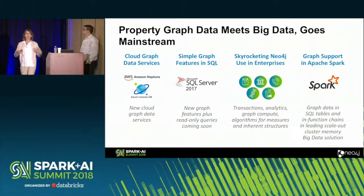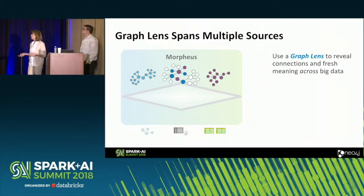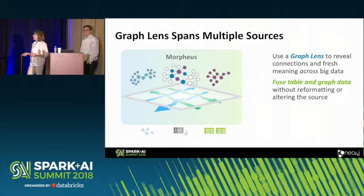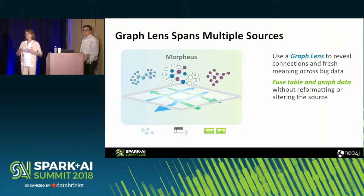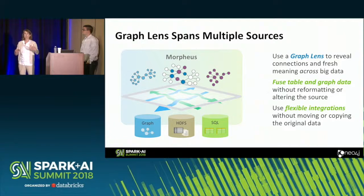Spark is probably one of the most popular scale-out platforms out there for compute. And it really made sense, as we were talking to our customers, to bring these things together and give you a graph lens that spans across multiple sources. You can look at your different sources — maybe it's graph, maybe it's tabular in HDFS, maybe it's a document within a table — and bring that data together without having to reformat or move your data. You can leave your data where it is and bring your analysis to that data.